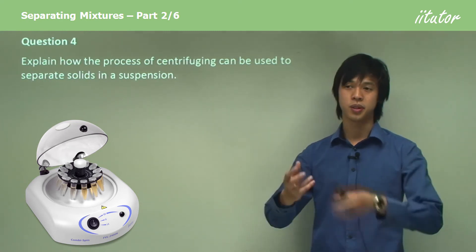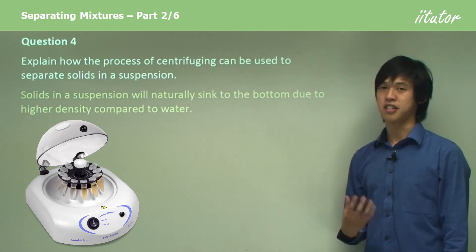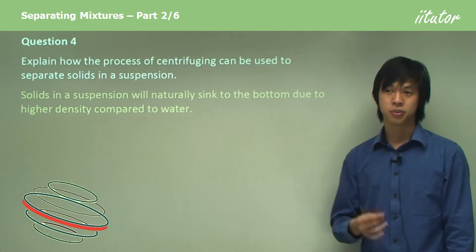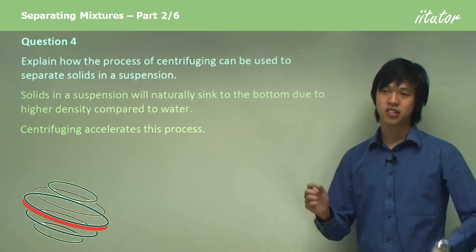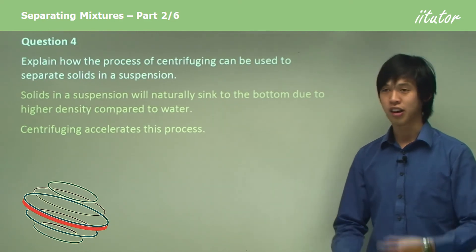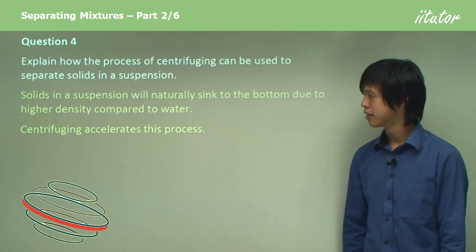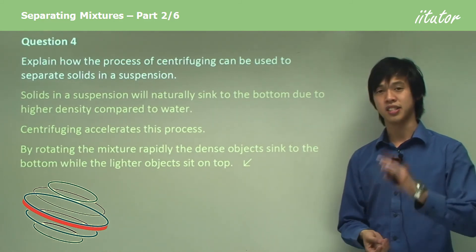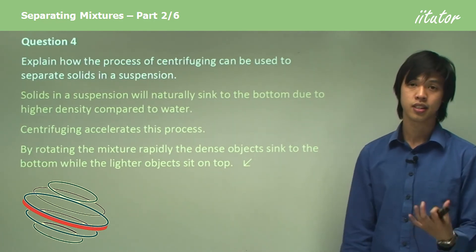To explain how centrifuging separates solids in a suspension: solids will naturally sink to the bottom due to their higher density compared to water. Centrifuging accelerates this process by making the effective acceleration on each particle larger — by rotating the mixture rapidly, the denser objects sink to the bottom while the less dense objects sit on top. That's how centrifuging works, exploiting density differences between different solids.